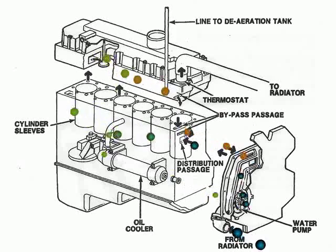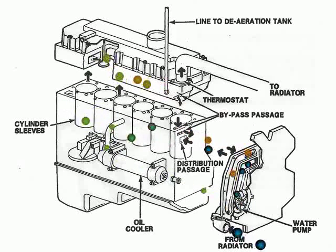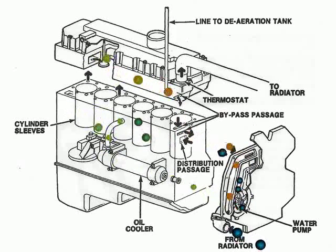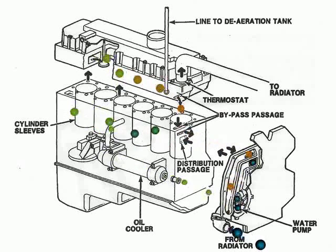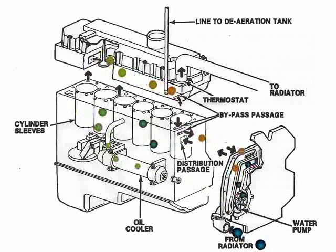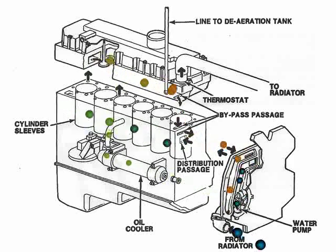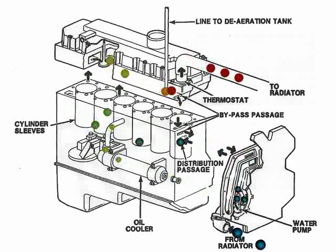Coolant exits through passages in the block located at the top of each cylinder sleeve bore, then is directed through the cylinder head around exhaust valve areas and to the thermostat. Depending on the temperature of the engine, the thermostat directs coolant to the water pump via the bypass passage or to the radiator.